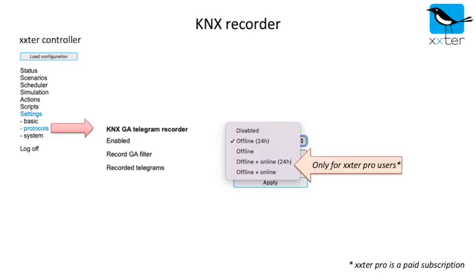On the extra controller, go to the protocols page and scroll to the KNX GA telegram recorder. Here you can enable the KNX recorder. You can either choose to record the telegrams for a period of 24 hours or continuously. You can choose to record offline and only store the telegrams locally on the device, or choose online where the data will automatically be uploaded to the extra cloud.